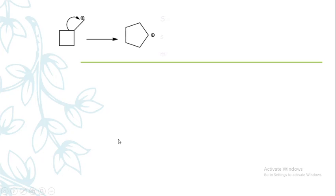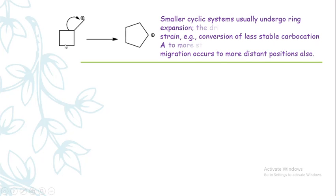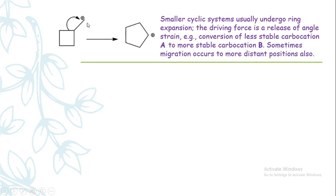Another rearrangement example: a four-membered ring carbocation undergoes ring expansion due to higher angle strain. The bond shifts over to the carbocation, forming a five-membered ring carbocation, which is more stable. The driving force is release of angle strain. Sometimes migration occurs to more distant positions as well.